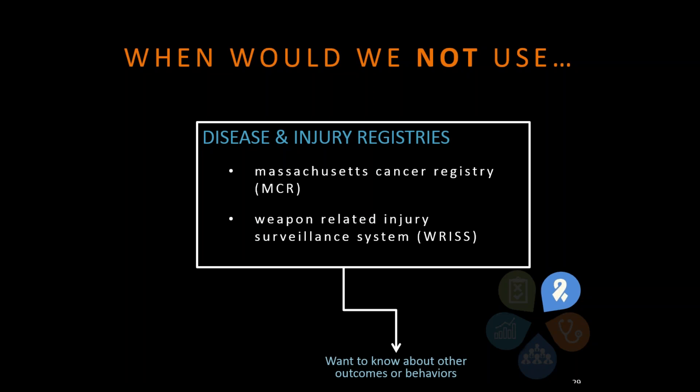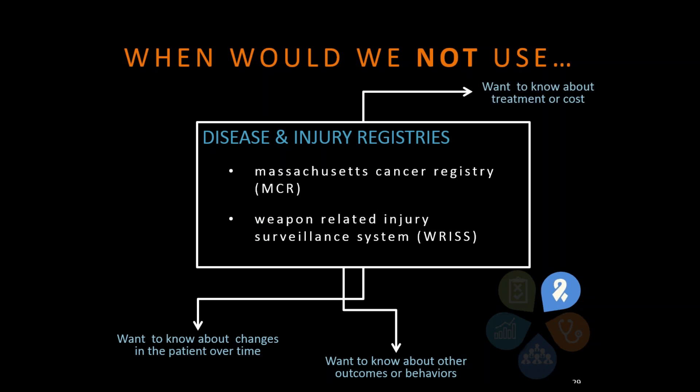When would you not use a disease registry? If you're interested in outcomes or behaviors. You can look up if someone was diagnosed with cancer, what stage it was, their race and ethnicity, their age — but you don't know what happened to them afterwards. It's not like an electronic medical record where you can follow one person over time. It also doesn't tell you about behaviors — you don't know how much they engaged in physical activity before they were diagnosed, so a health survey would be more useful for that. If you want to know about treatment or cost — how many procedures they had, how many ER visits, how many prescriptions filled — disease registries don't tell you that, so for cost analyses they would not be appropriate.